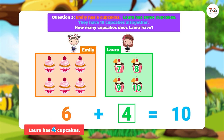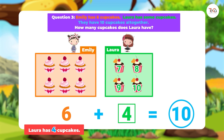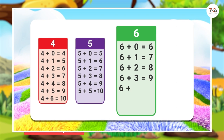Question 3 is one type of word problem where the sum is known and we have to find a missing number. You can use a question mark or a box for the missing number. To find the missing number, the ideal way is to recall the addition facts.